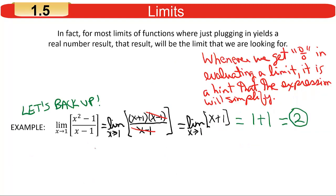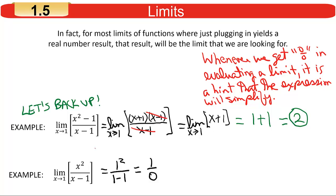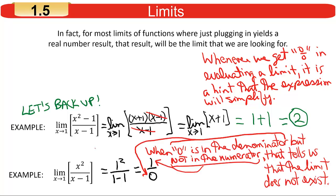Here's another case: the limit of x²/(x−1) as x approaches 1. Plugging in gives 1/0. Having a 0 in the denominator is always a problem, but unlike 0/0, getting something-over-0 that isn't 0/0 is an indication that the limit does not exist. We use DNE (does not exist) to indicate that the limit in fact does not exist.